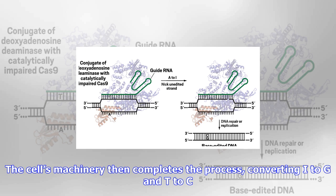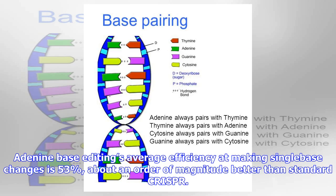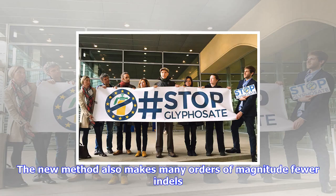The researchers used a conjugate of the deoxy-adenosine deaminase with a catalytically impaired Cas9 to convert A to I at a target site and to nick the opposite strand. The cell's machinery then completes the process, converting I to G and T to C. Adenine base editing's average efficiency at making single-base changes is 53%, about an order of magnitude better than standard CRISPR.